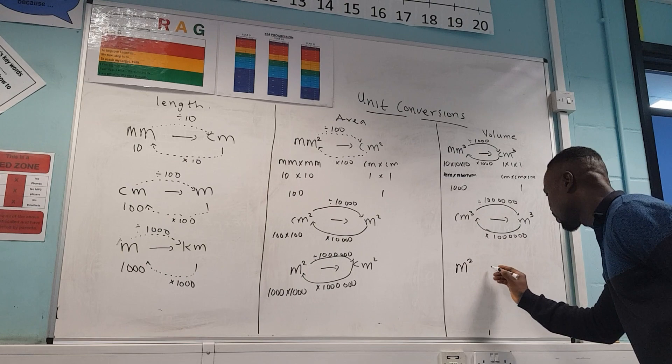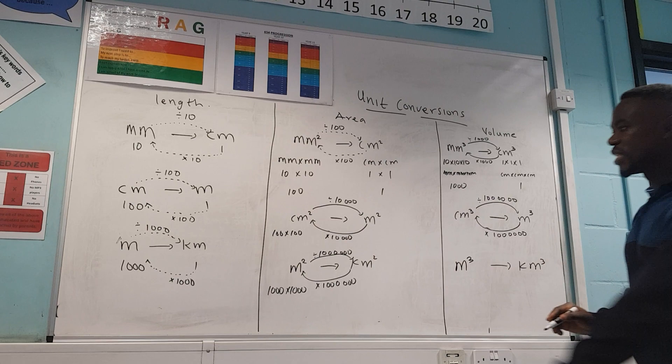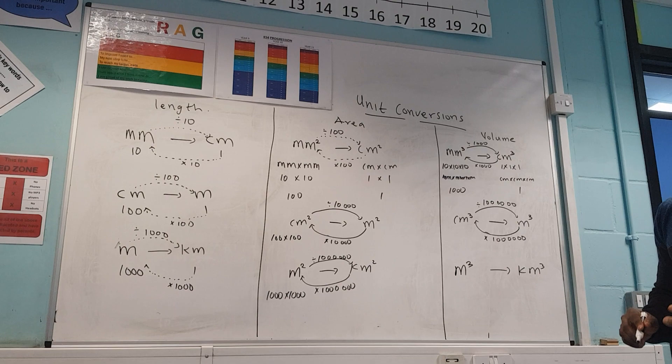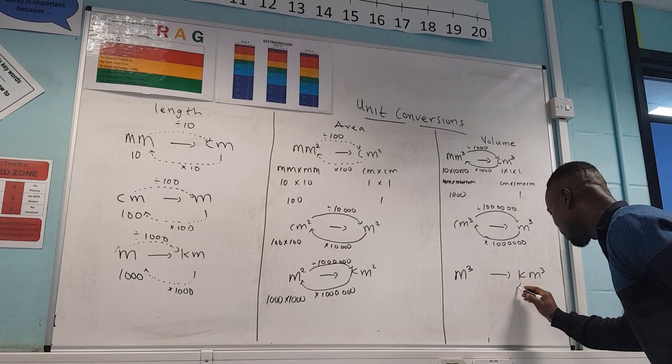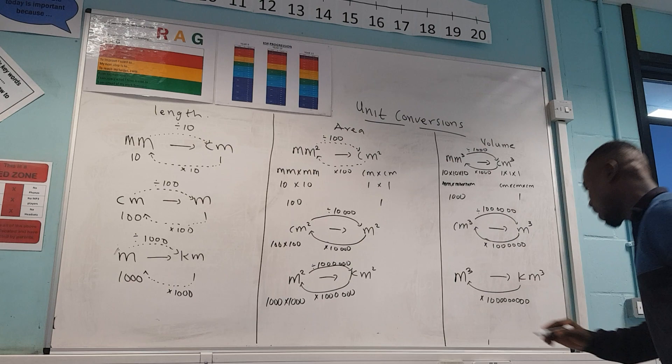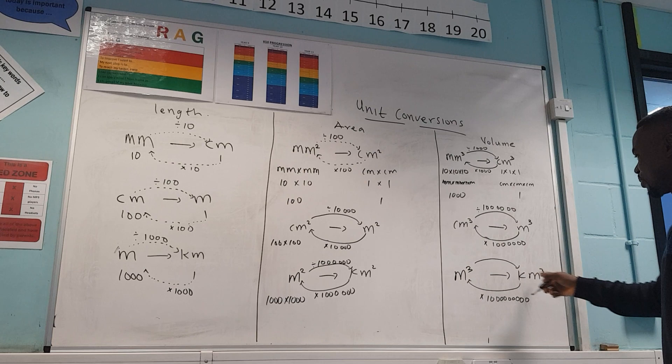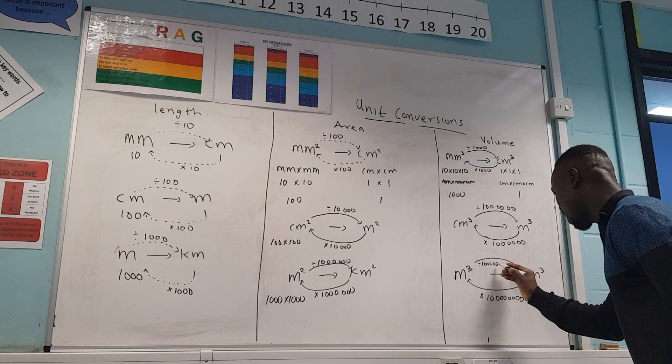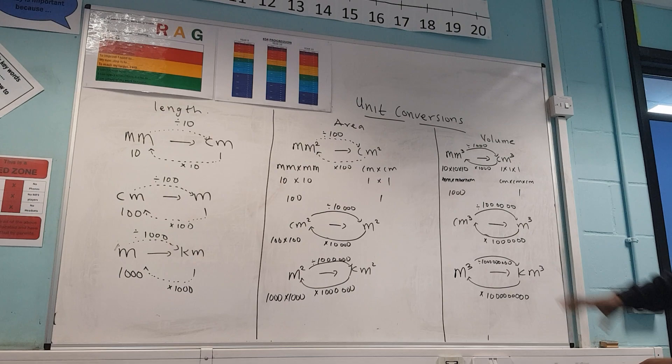For meters cubed to kilometers cubed, meter is 1,000, so it's 1,000 times 1,000 times 1,000 — that's nine zeros, which is one billion. So to convert meters cubed to kilometers cubed you divide by one billion, and going the other way you multiply by one billion. Usually you don't get exam questions from meters cubed to kilometers cubed.